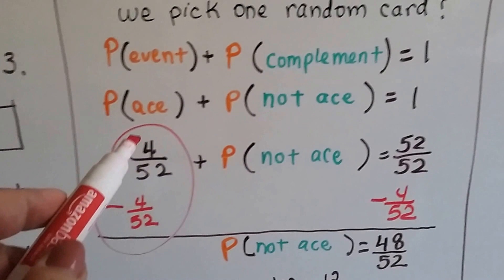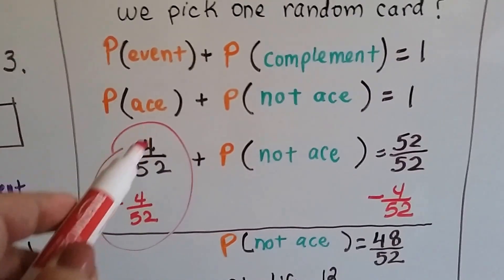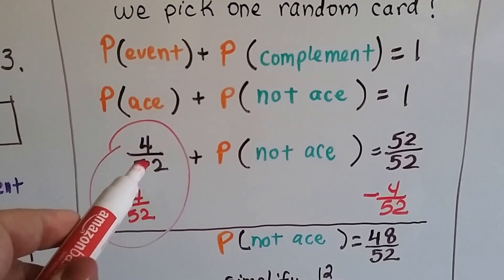So the probability of getting an ace plus the probability of not getting an ace is 1. The probability of getting an ace, with four aces in a deck of 52 cards, is 4 over 52, plus